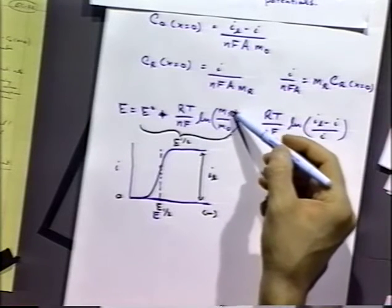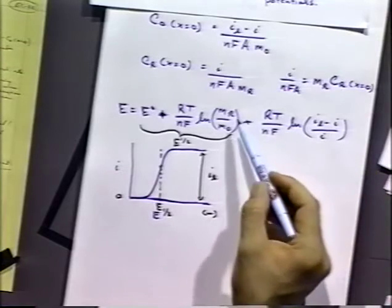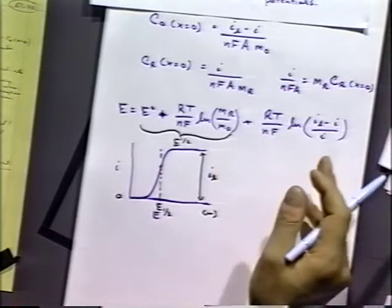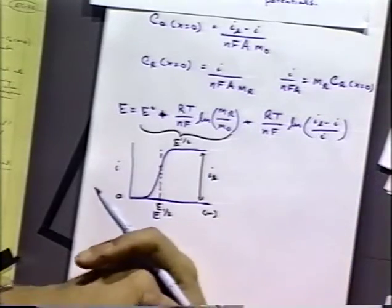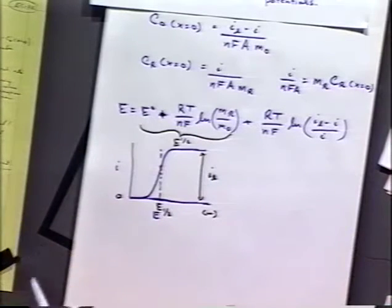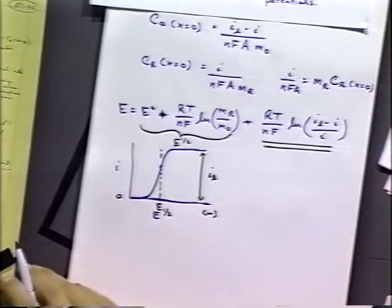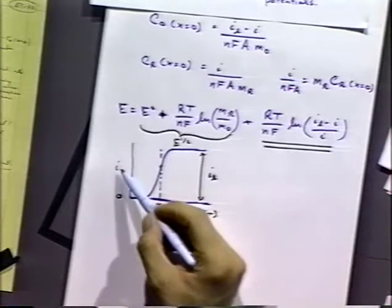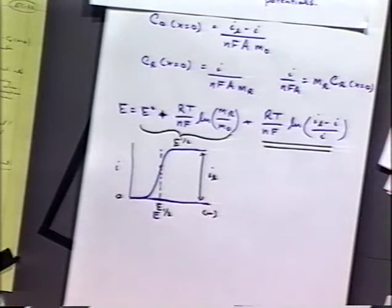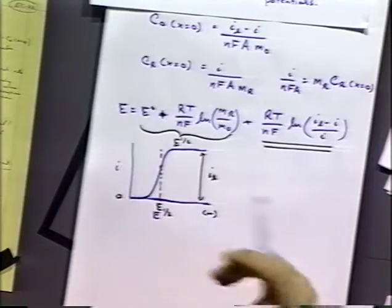Usually the mass transfer coefficients of species R and O are somewhat similar, but not always. Species R may transport more rapidly than species O — R might be a neutral species and O an ion, which often have different rates of diffusion or mass transport. This equation shows the current-potential curve under simplifying assumptions: only O is present in solution, electron transfer is very fast, no chemical reactions occurring simultaneously, and we used the fudge factor delta.